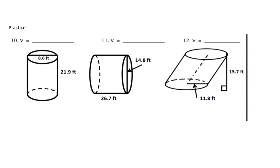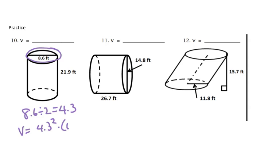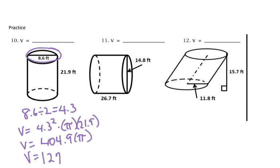Welcome back. Starting with number 10, let's see how well you did. We've got a diameter, so we need to take 8.6 divided by 2, which will give us 4.3. For our volume, we're going to get 4.3 squared times pi times 21.9. We'll get 404.9 times pi. When we put in our calculator, we take 404.9 times 3.14. We'll get 1,271.4 feet cubed.